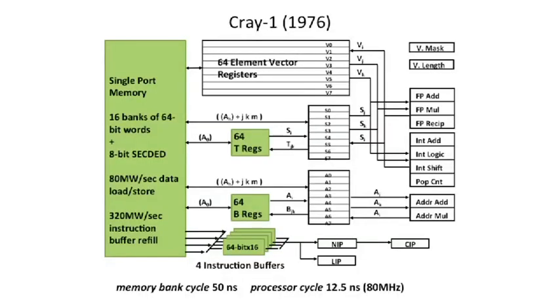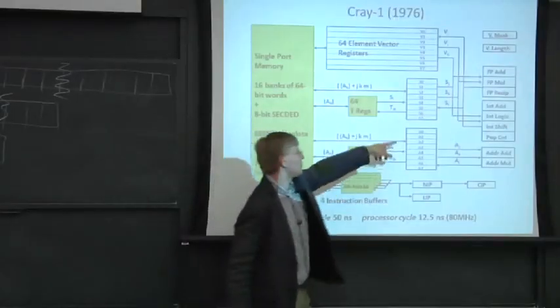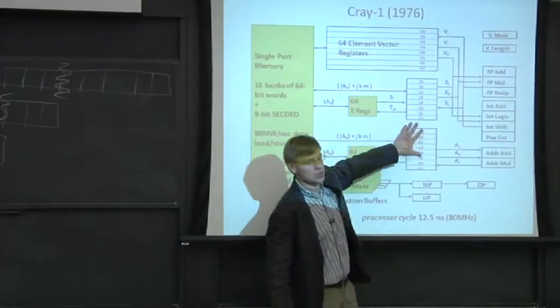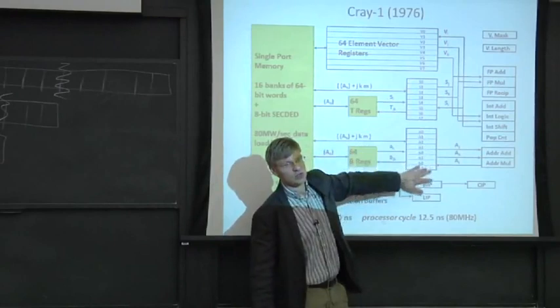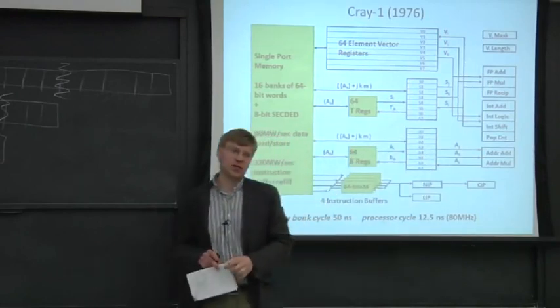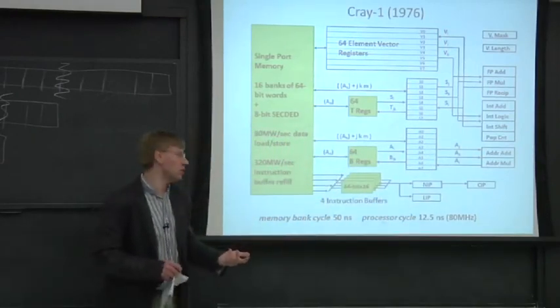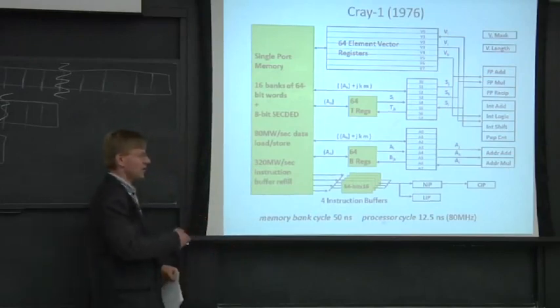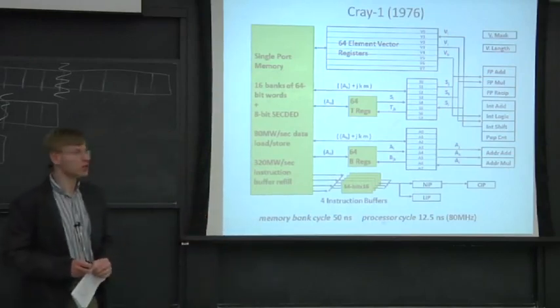Here's the microarchitecture of the Cray 1. And what you see is they have eight vector registers with 64 elements each. Their vector length is 64, or their maximum vector length is 64. And they also have a bunch of scalar registers. And they had a separate addressing, address register bank of registers. And you can only do loads and stores based on these address registers.